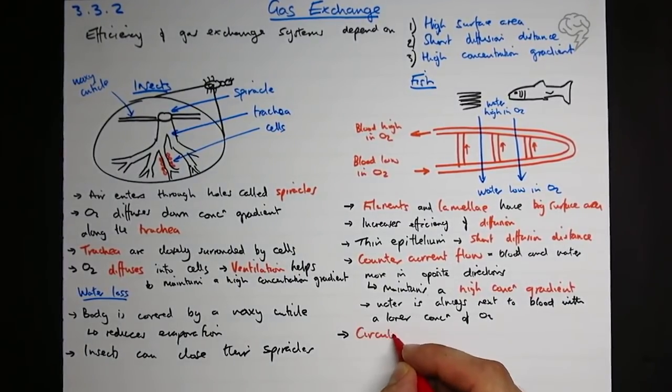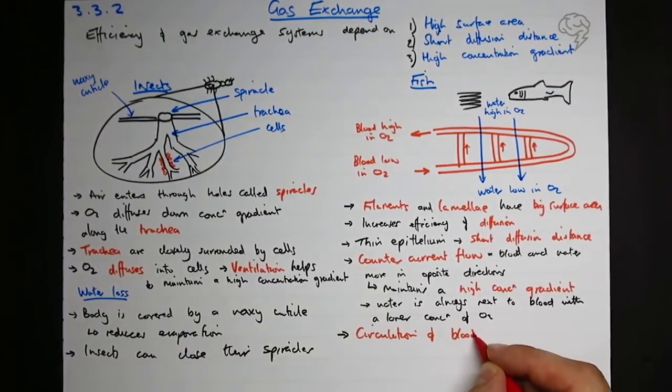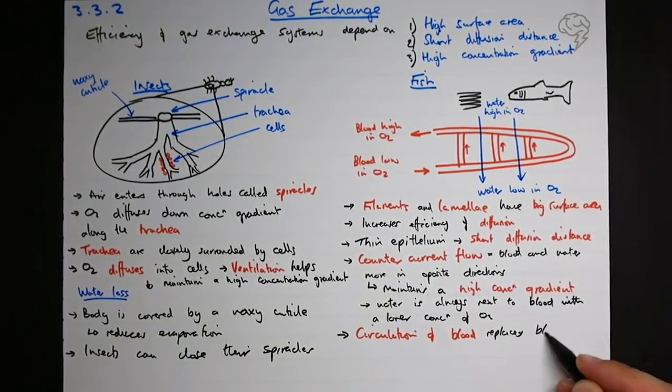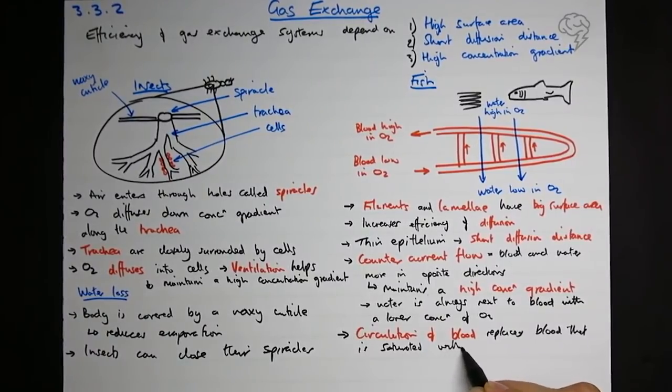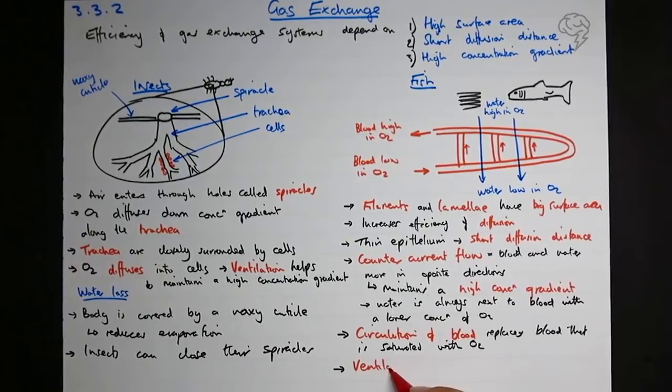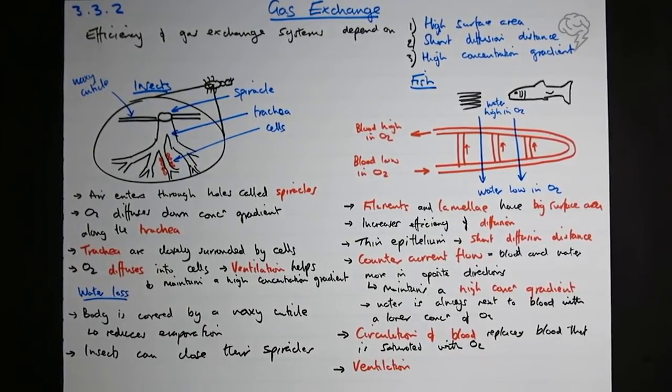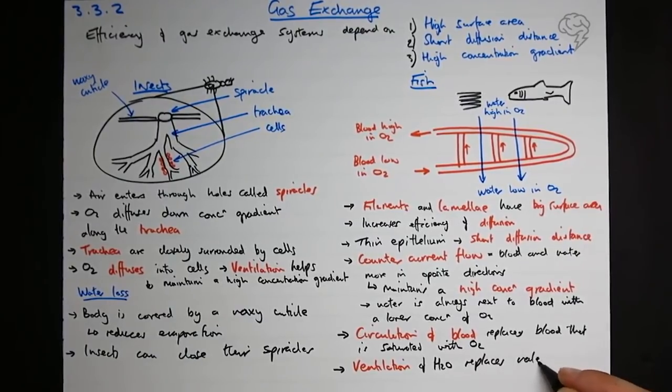What other things do we have? We've got circulation of the blood. What does this do? This replaces blood that's saturated with oxygen. And we have ventilation of the water, which replaces the water that's low in oxygen.